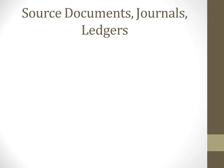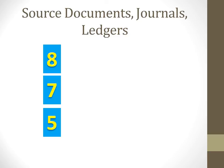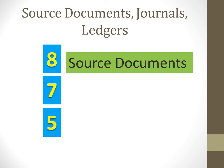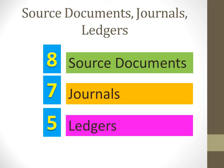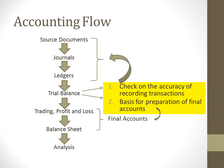To round up, for source documents, journals, and ledgers, I want you to remember three digits: 8, 7, 5. They are numbers important for you to remember — there are 8 source documents, 7 journals, and 5 ledgers. I hope you can remember this. I've come to the end of this video lesson, and I hope it has provided you with a clearer understanding of source documents and how they get recorded in the journals, and how transactions are then posted to the ledger. Thank you.